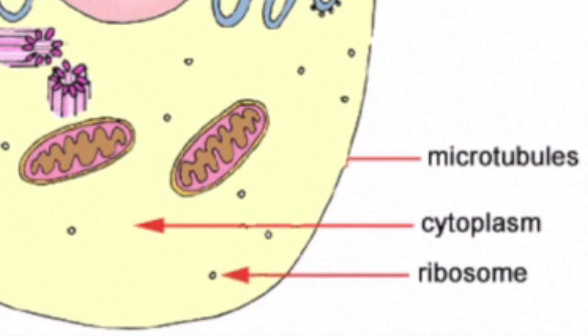Ribosomes are tiny grain structures. They produce protein which is very important for the cell.